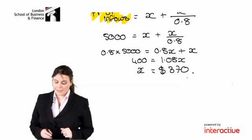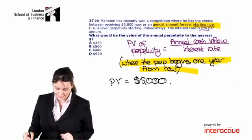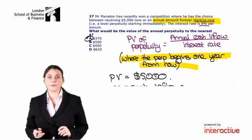So, the final thing we have to hope is, is 370 one of the multiple choice answers? And yes, we can see that is answer option A.